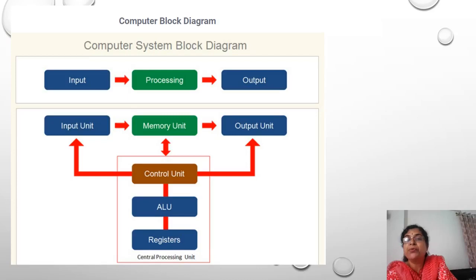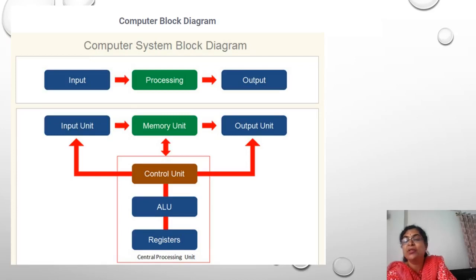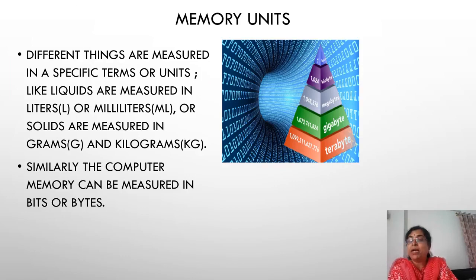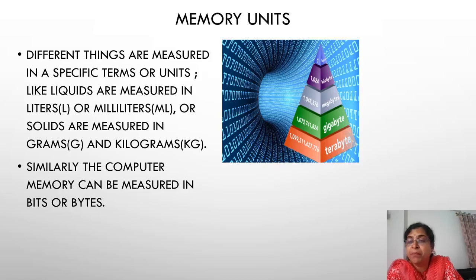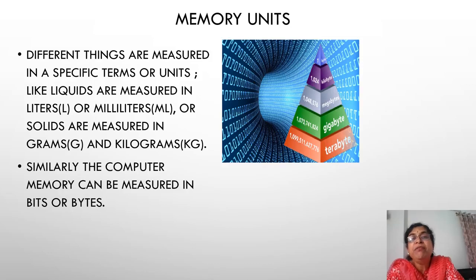Whatever results are produced remain in the memory unit until they are sent to output devices. Memory is very important for computers. But how do we measure this memory? How much memory does a computer have, and is it fast or slow? Computer speed also depends on the memory unit.